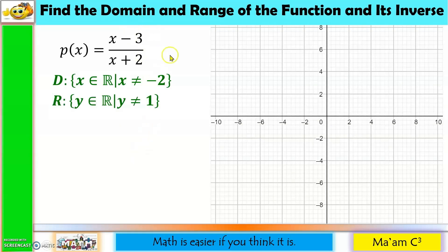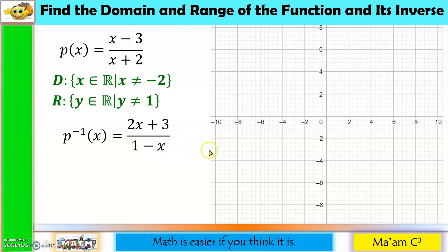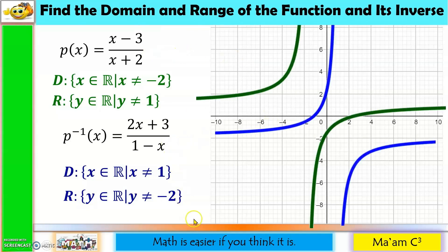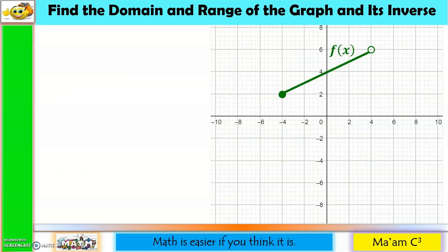The inverse of (x − 3)/(x + 2) is (2x + 3)/(1 − x). Setting 1 − x = 0 gives x = 1, so the domain of the inverse is all real numbers except 1. The range of the inverse equals the domain of the original function — all real numbers except −2. Graphing both and drawing y = x shows they are reflections of each other.